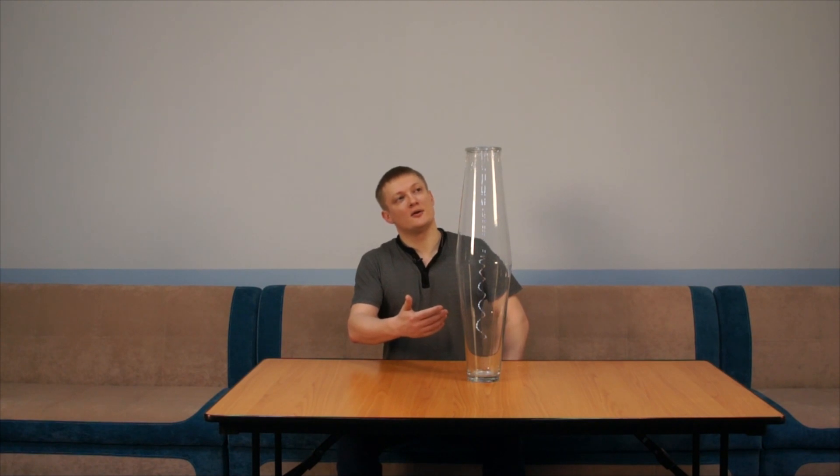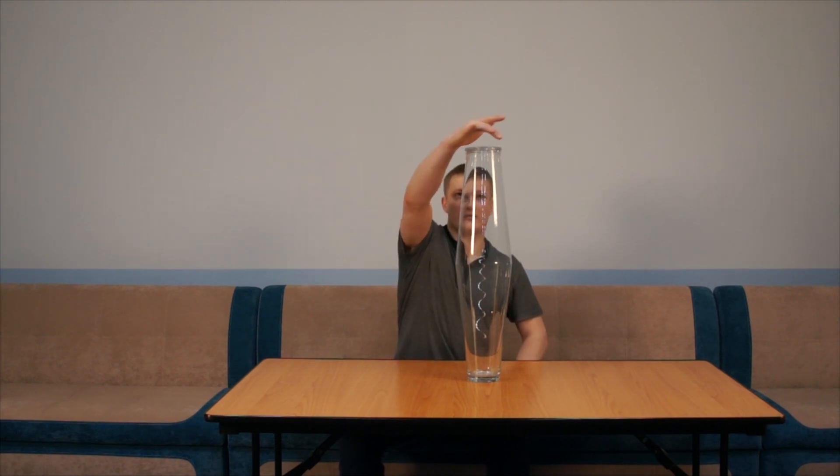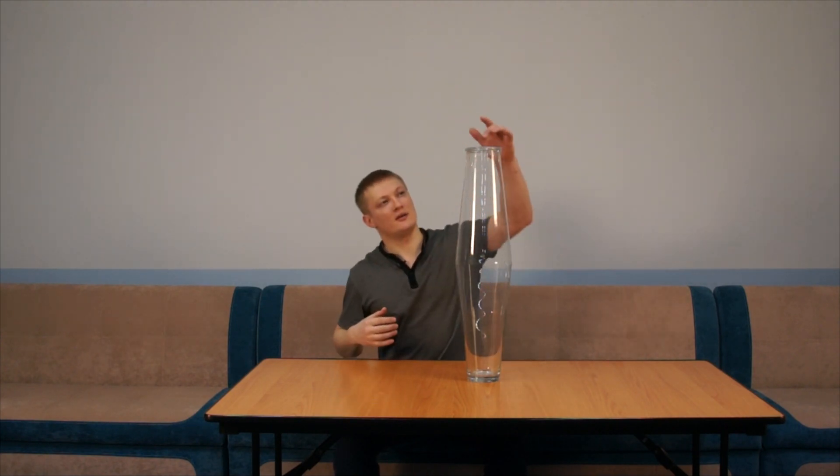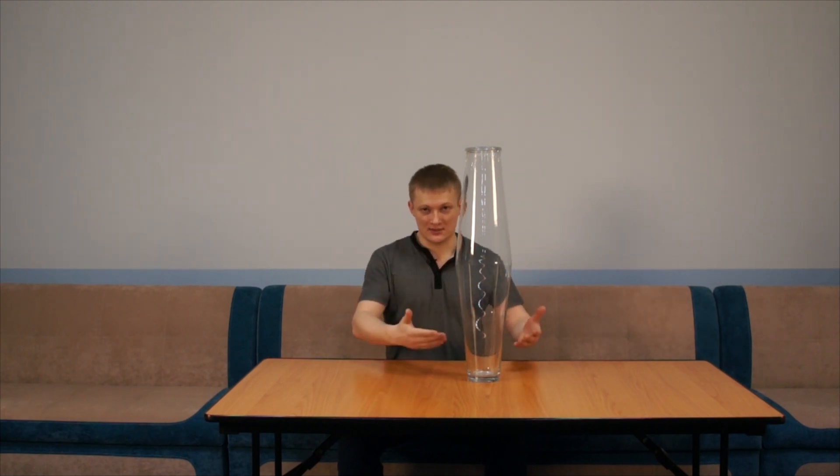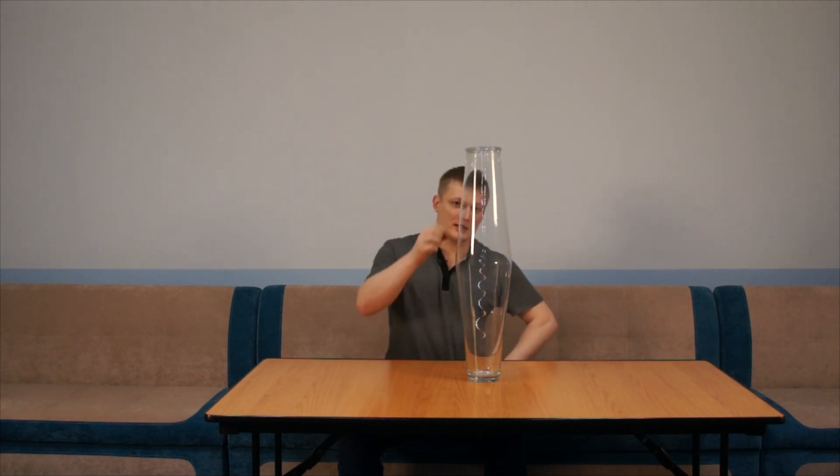As you see, that is a glass jar. It doesn't have any holes and stands on a table. That is a paper spiral and very thin thread.